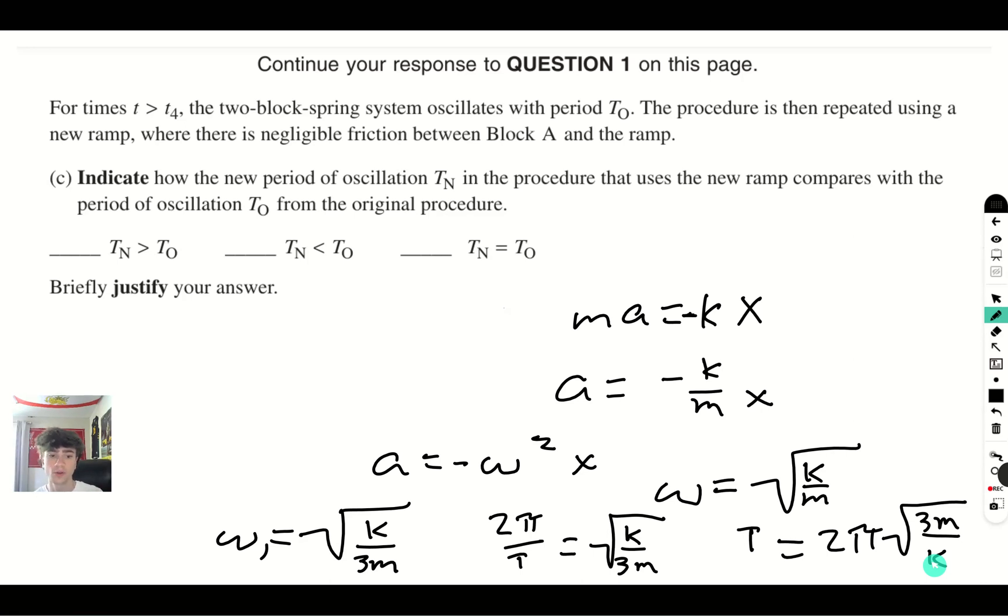And in this experiment, neither of those two factors are touched. It's the coefficient of friction of the ramp that is affected. And as we know, that does not play a part in the period of oscillation. And therefore, the two periods of oscillation will be equal to each other.